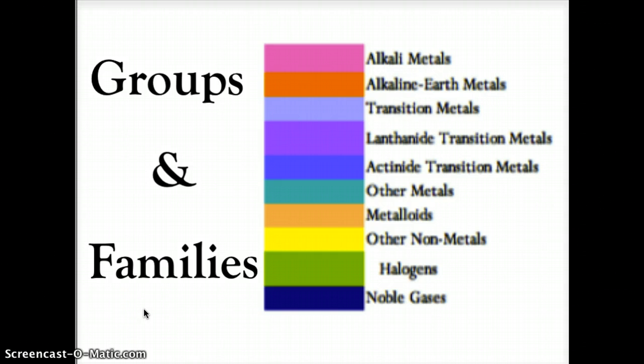Our periodic table is quite colorful because sections are divided by groups or families. Groups are columns, and families are elements that share common characteristics. The colors relate to different groups or families — for instance, bright pink is an alkali metal, purple is the lanthanide transition metals, and yellow indicates other non-metals. Each color represents either a column of elements or a block of elements that share a common set of characteristics.